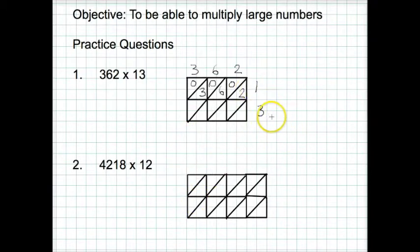Then we move on to the second row. 3 times 2 is 6. So 0 in the top, 6 in the bottom. 3 times 6 is 18. Now we've got a double digit number. We write a 1 in the top and an 8 in the bottom. And 3 times 3 is 9. 0 in the top and a 9 in the bottom there.